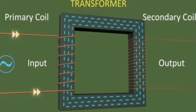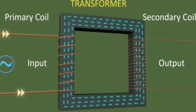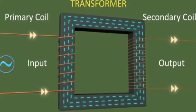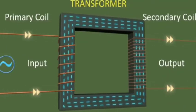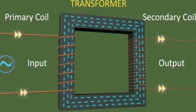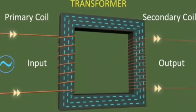The flux associated with the secondary coil continues to change, and as a result we get an output AC current.